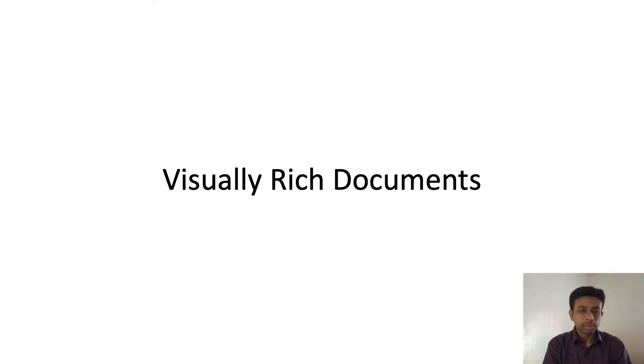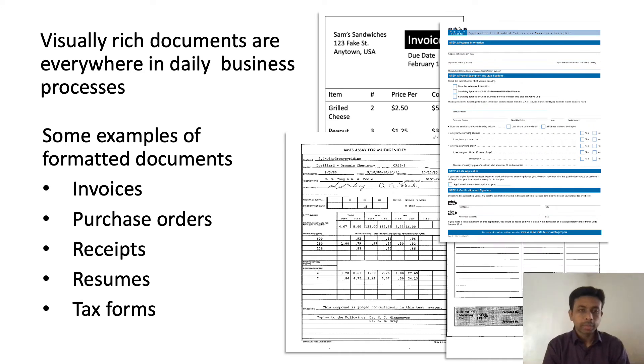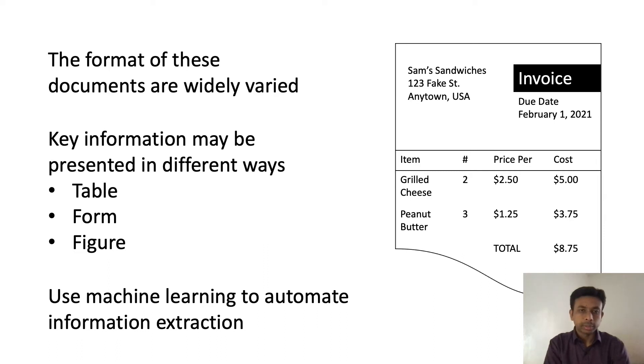Our goal is to extract key information from visually rich documents. These documents are used everywhere in businesses and in our daily life—examples are invoices, purchase orders, receipts, etc. To understand these documents, we need to look at both the text and the layout of the page. There is no single format for these visually rich documents. The information can be presented in different ways like tables, forms, figures, etc., so it is not easy to create custom rules for extracting information from these widely different formats. We can use machine learning to automate the information extraction task from these types of documents.